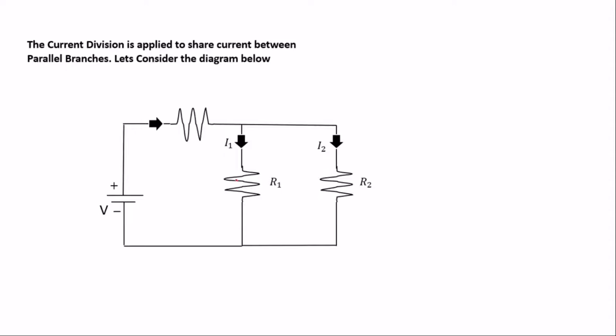We are going to prove the formula for finding i1 and i2 — the currents passing through resistor one and resistor two. This applies to parallel branches. The total resistance for two parallel resistors is: R_total = (R1 × R2) / (R1 + R2).